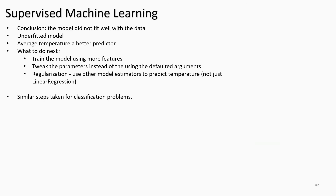To conclude, the accuracy scores and visualization in the case study showed a poorly fit model — more work would need to be done to improve it. Examples of next steps go beyond the scope of this module. Keep in mind that the steps taken in this case study can be applied to different scenarios with different data, including multivariate regression with multiple features, or other machine learning types.